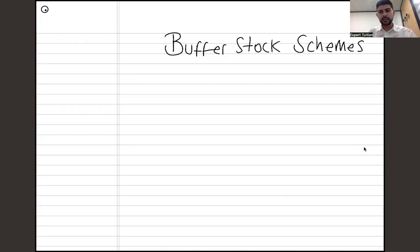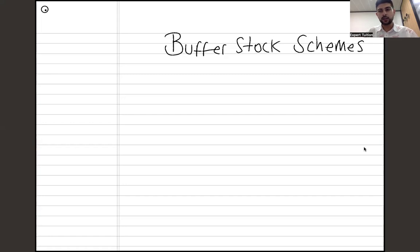Before we talk about what a buffer stock scheme is, you need to understand that one of the issues facing a lot of developing countries is that they are primary product dependent — they rely heavily on the export and sale of a particular primary product. A primary product is anything sourced from the earth; another name for it is a commodity. You have soft commodities like wheat, barley, and agricultural products like tomatoes, and then hard commodities like copper, zinc, and gold.